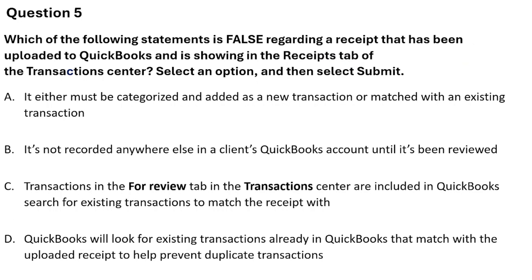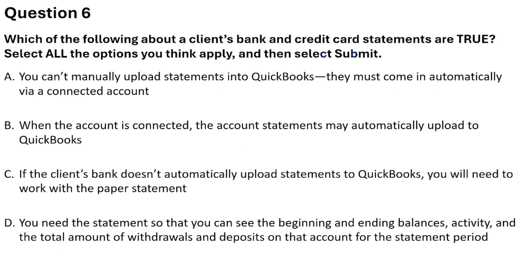Question 5: Which of the following statements is false regarding a receipt that has been uploaded to the books and showing in the receipt tab of the connection center? Options: A) It must be categorized and added as a new transaction or matched with an existing transaction. B) It is not recorded anywhere else in the client's QuickBooks account until reviewed. C) Transactions in the For Review tab in the transaction center are included in the QuickBooks search for existing transactions to match the receipt. D) QuickBooks will look for existing transactions that match the uploaded receipt to help prevent duplicate transactions. The correct answer is C — that statement is false.